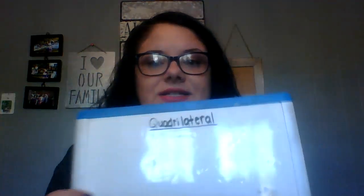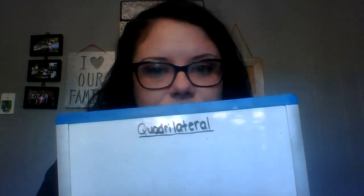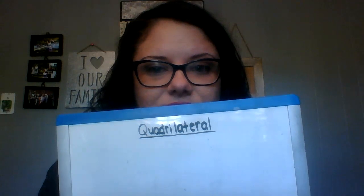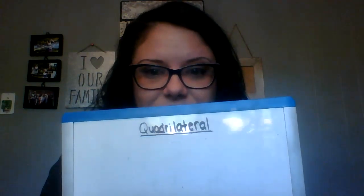Today we're going to talk about some geometry and look at quadrilaterals. Quadrilaterals are shapes that have four sides. Any shape that has four sides — if it does not have four sides, it's not a quadrilateral. Let's look at this one: is it a quadrilateral? No, because it only has three sides. This is a triangle.